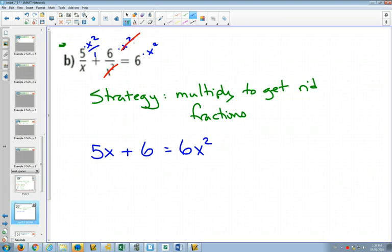It's one where we can possibly factor. How do we set that up, though? We have to subtract things to make one side equal to 0.